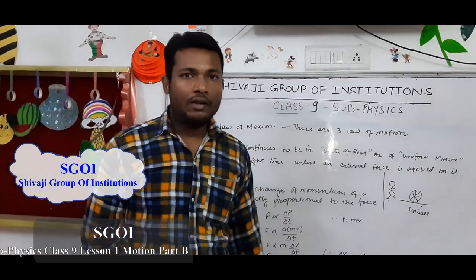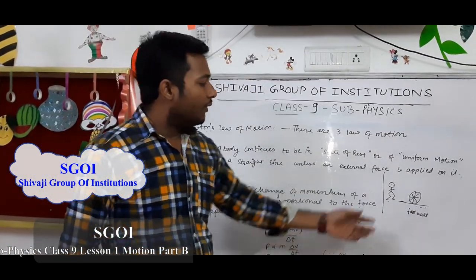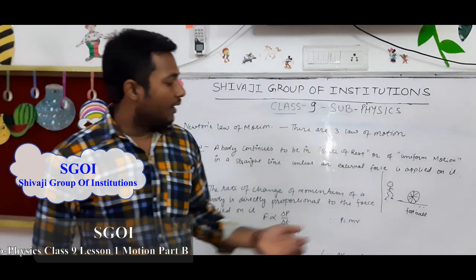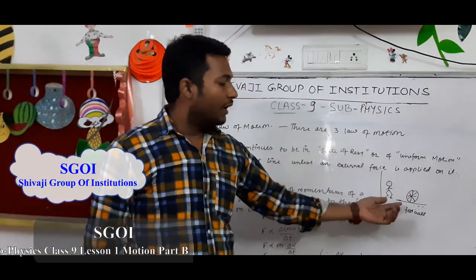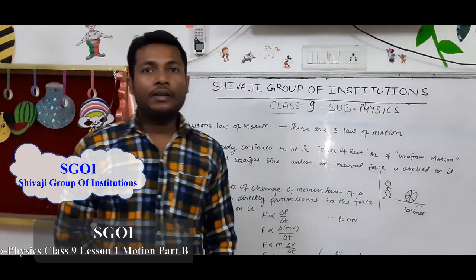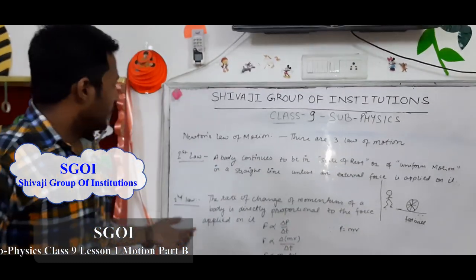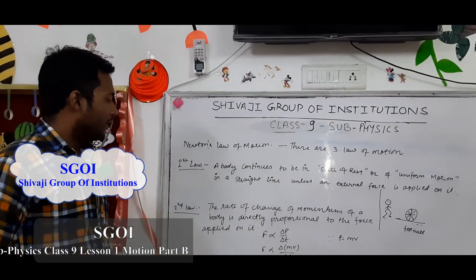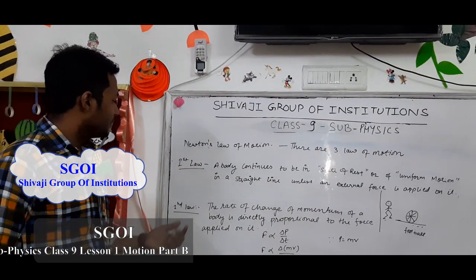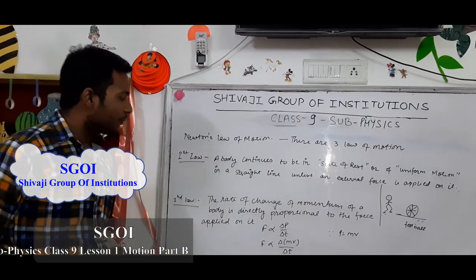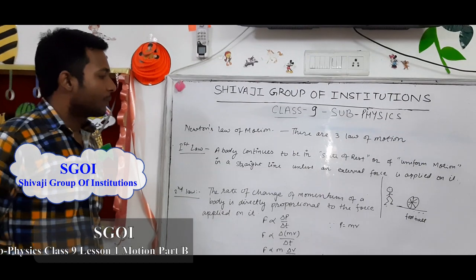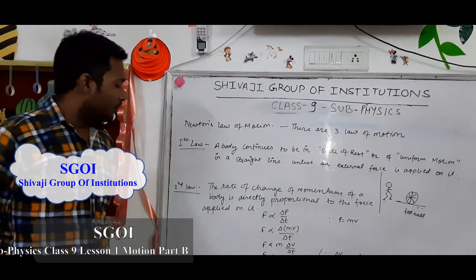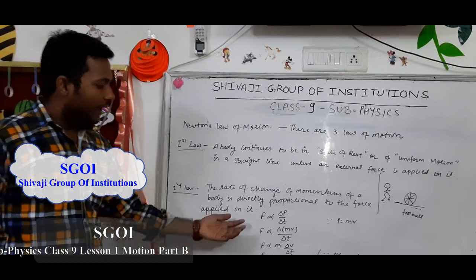For example, here is a football kept on the ground. It will remain in a static position until a boy kicks it. Now let's see the second law of motion: the rate of change of momentum of a body is directly proportional to the force applied on it.